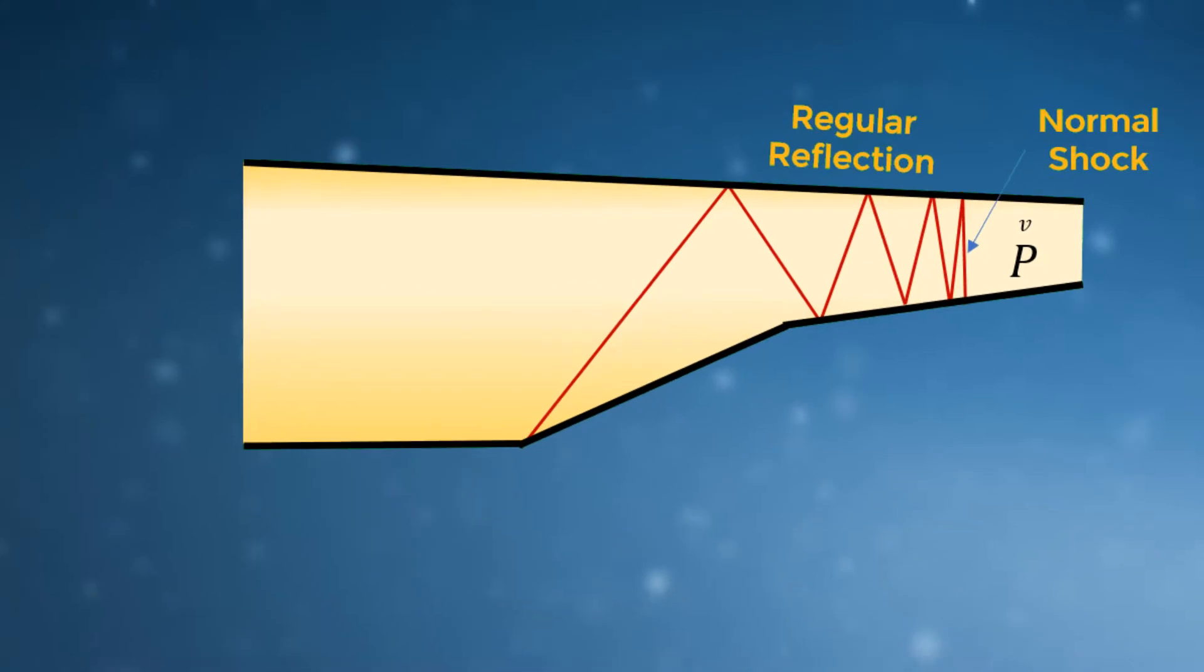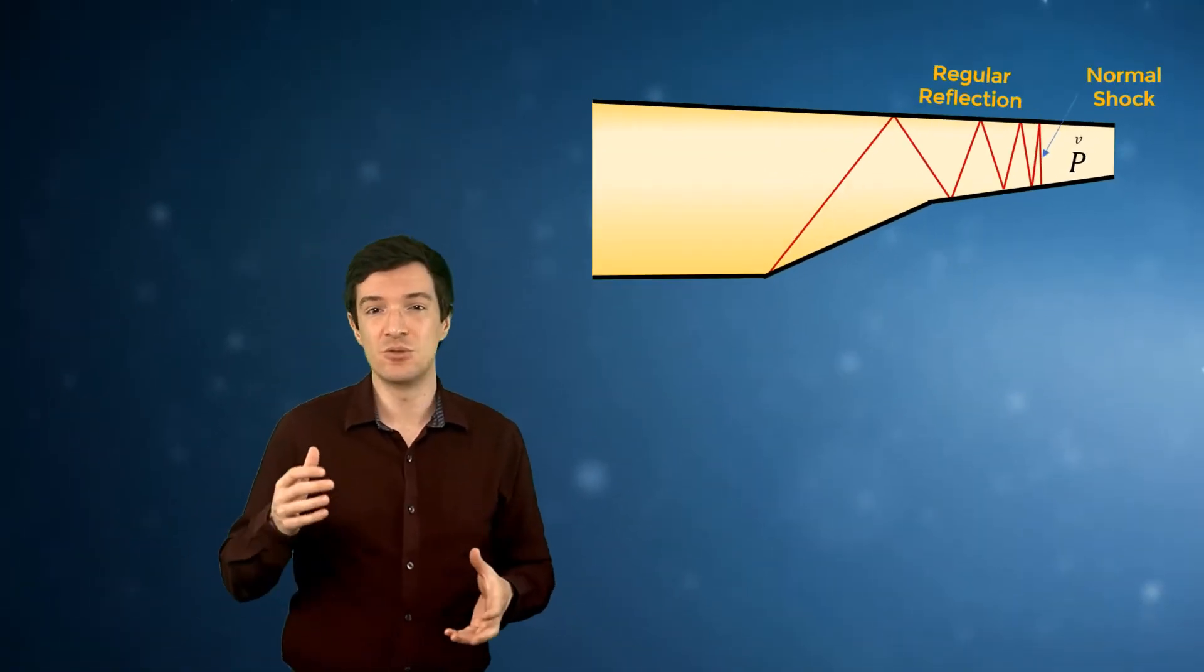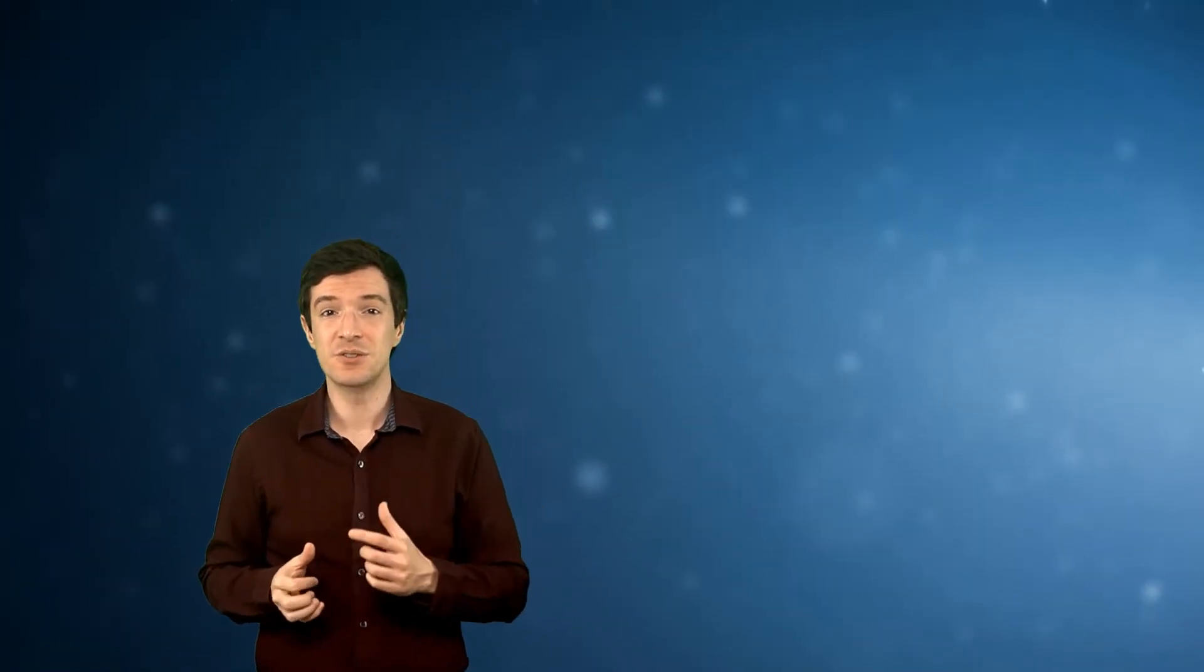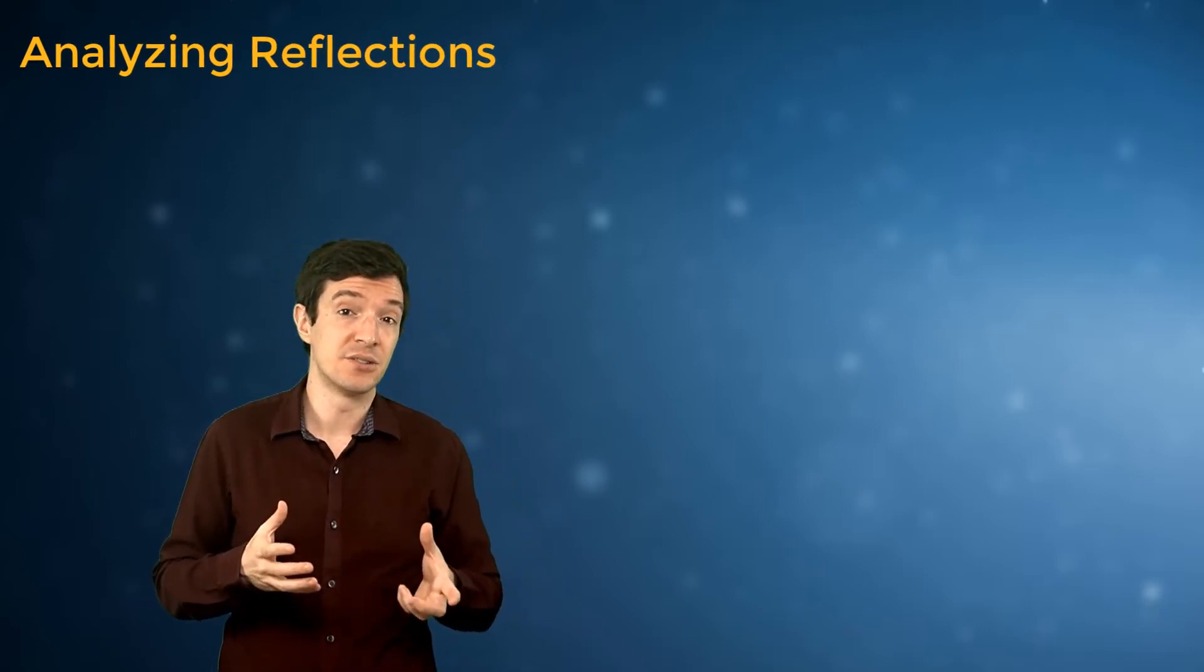This mechanism is used to design supersonic turbojet inlets in order to compress the air and make it subsonic before entering the combustor. Let's now look at how we can analyze the reflections using the oblique shock relations.